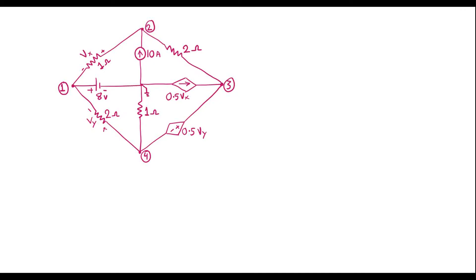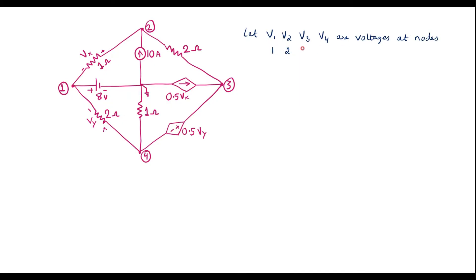Let me simplify this. So this is the given circuit. Let me assume voltage at node 1 is V1, voltage at node 2 is V2, voltage at node 3 is V3, and voltage at node 4 is V4 — that is, V1, V2, V3, and V4 are voltages at nodes 1, 2, 3, and 4 respectively.